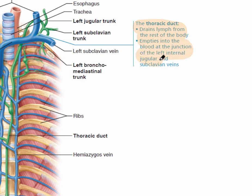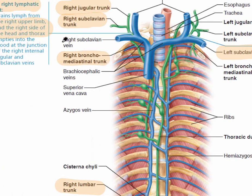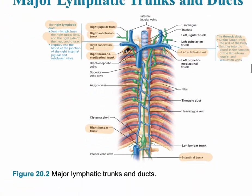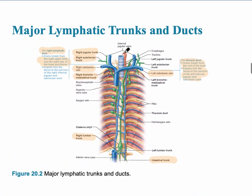All of these ducts — whether the right lymphatic duct or the thoracic duct — drain into subclavian veins. The left subclavian vein is the entrance point for the thoracic duct, and the right subclavian vein is the entrance point for the right lymphatic duct.